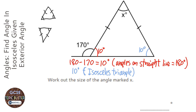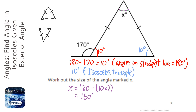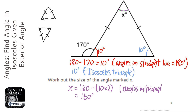The last step is to find x — I'll do it in purple so it shows up a bit better. x equals 180 take away 10 times 2, so take away 20, which gives 160 degrees. The reason for that is: angles in a triangle equal 180 degrees.